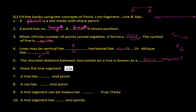Now, draw line segment AB. Here is point A and here is point B, and the shortest distance between them is AB — that is the line segment.